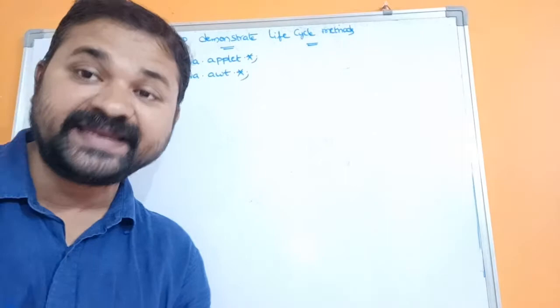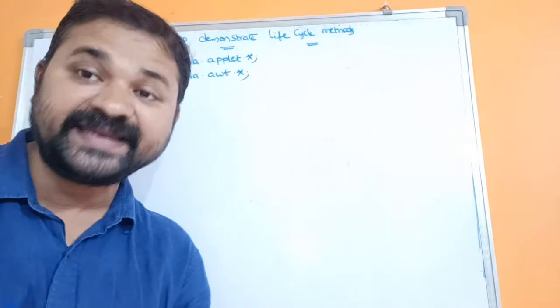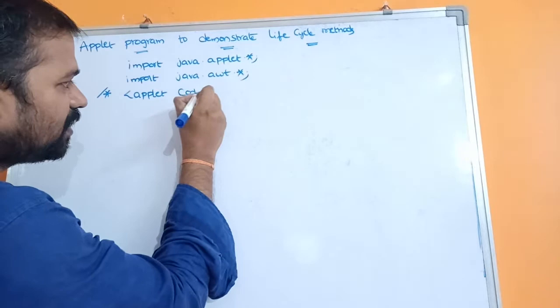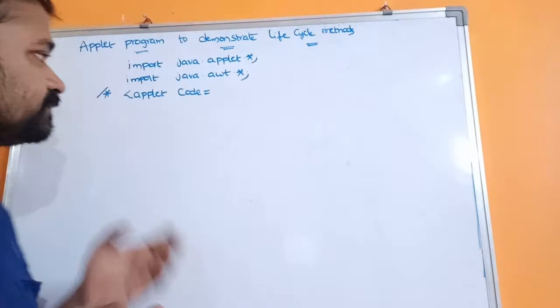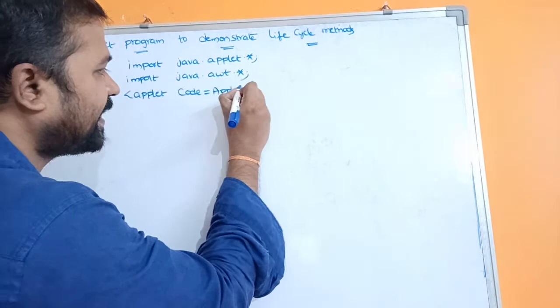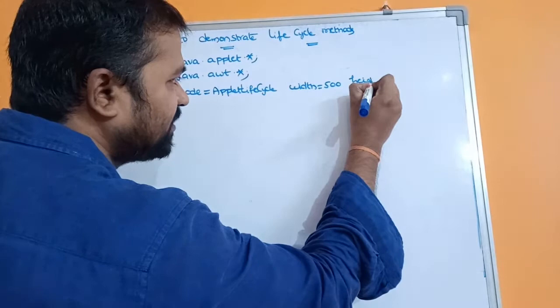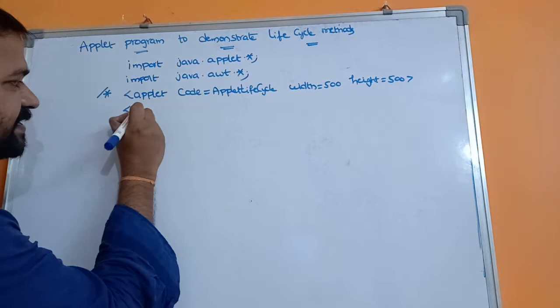The awt package contains the component class. The component class contains the paint method. Next we have to write the applet code within comments. Here we have to use the applet tag. The attributes of the applet tag are: code — which is the Java class name, let's say 'AppletLifeCycle'; width equal to 500; and height equal to 500 pixels. Then we close the applet tag and close the comments.